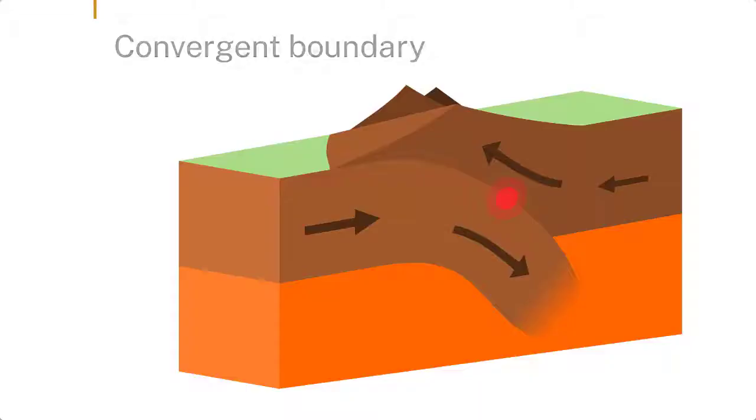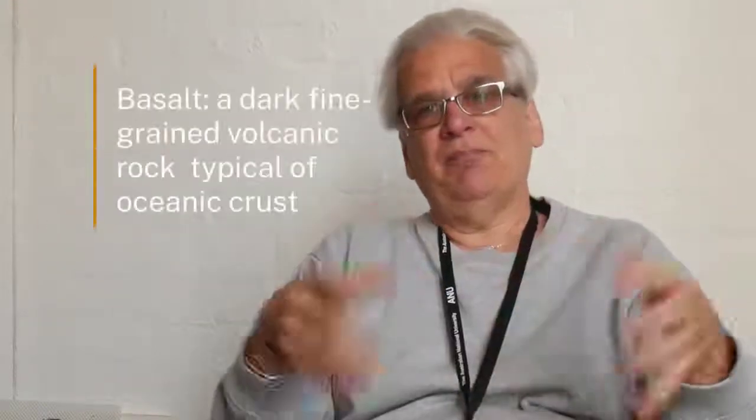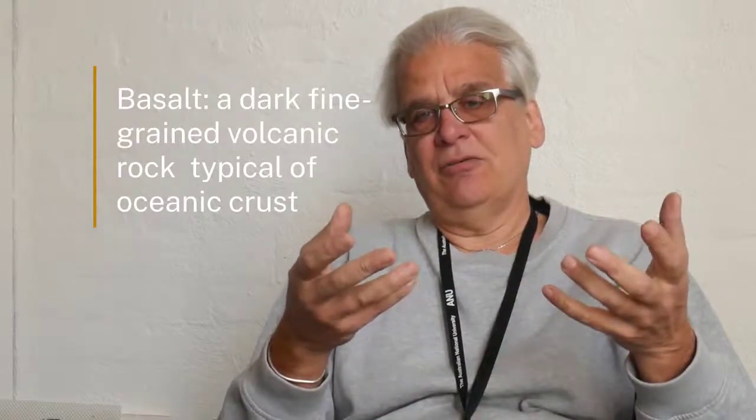When that crust meets another piece of brittle surficial crust — whether it be continental or oceanic — one of them will subduct. So that'll be a convergent margin. Most of the action on Earth is happening at these boundaries: either at the divergent boundaries where basalt is coming up from the mantle and we're forming new crust, or at the places where we're converging and we have subduction.